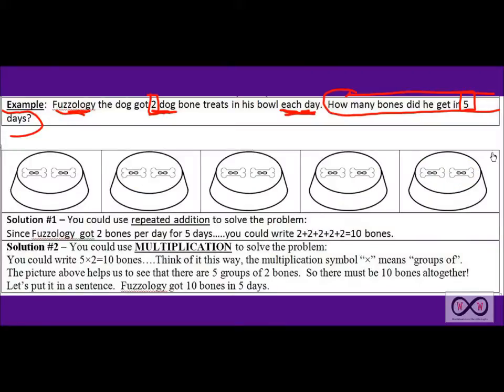Two plus two plus two plus two more plus two more gets a little repetitive doesn't it? Well that is solution one. That would be using repeated addition. You could use two plus two plus two plus two plus two equaling ten bones.